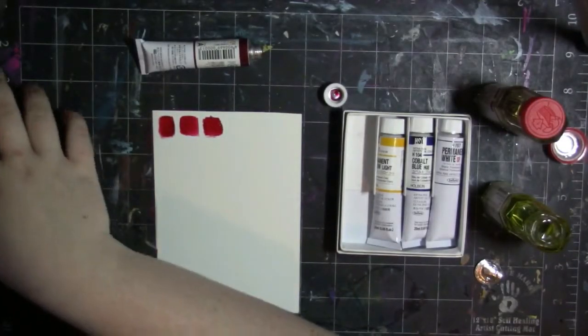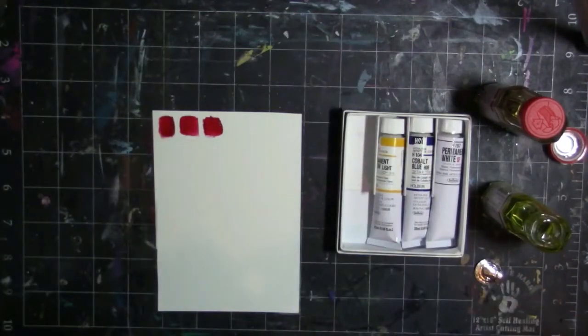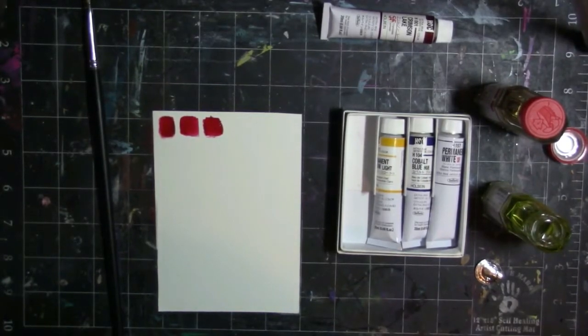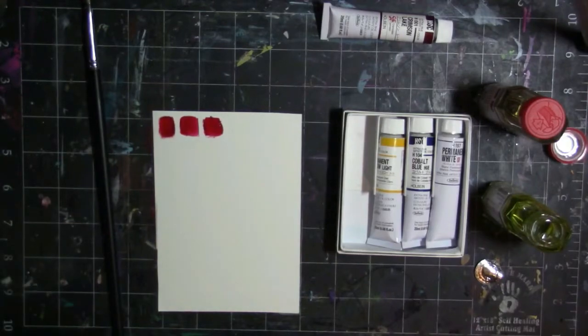And so you will see that I am first doing a swatch of just the paint itself. And then the middle swatch is with the quick dry medium. And then the third swatch is with the linseed oil. And the linseed oil thins it down a lot. So it's kind of like the equivalent of adding water to your acrylic paints or to your watercolors. Like the more you add, the more water down it gets.